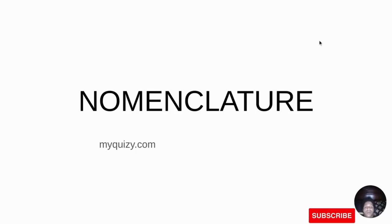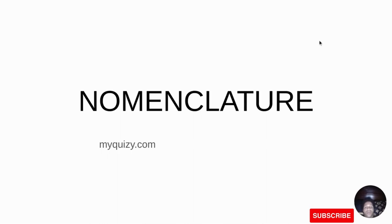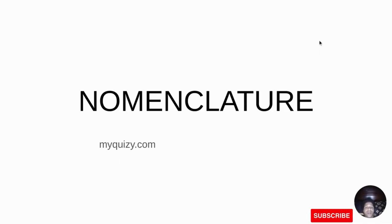Let's continue with the second part of nomenclature. Last time we explained that nomenclature is given to certain compounds. We explained where we can calculate nomenclature, how we can name alkane, alkene, and alkyne, and also about the functional group, the parent chain, and the substituent.